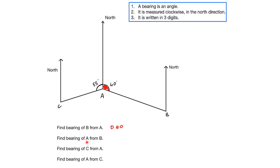Next, we have the bearing of A from B. Where is B? From north we go clockwise. This is the bearing we want. There are two ways to get it. If the opposite angle is given — that is 40 — then the bearing will be 40 plus 180, which is 220. Or we find the angle using the parallel lines rule: the co-interior angles sum to 180, so 180 minus 40 gives 140.